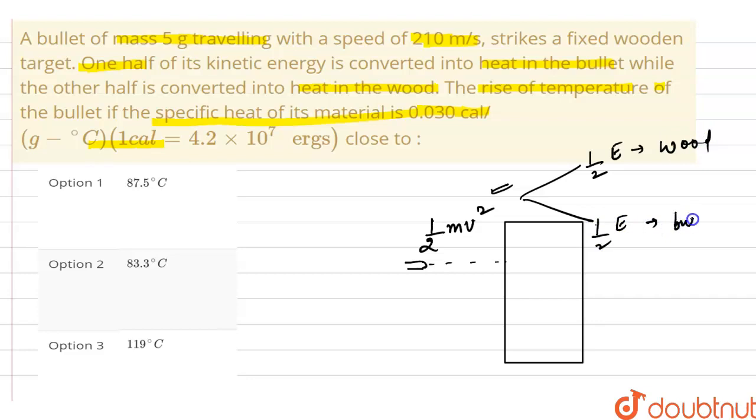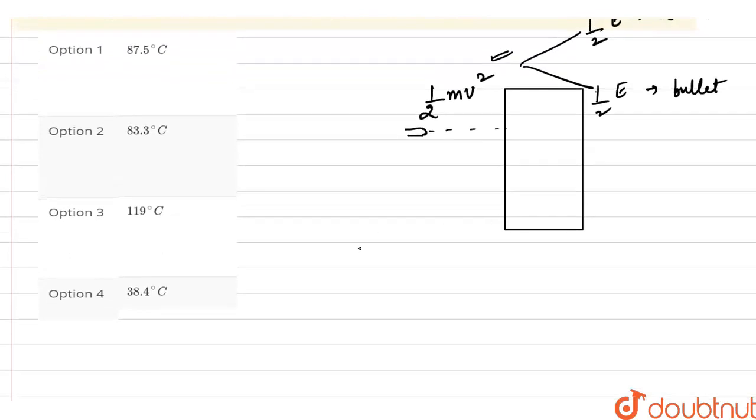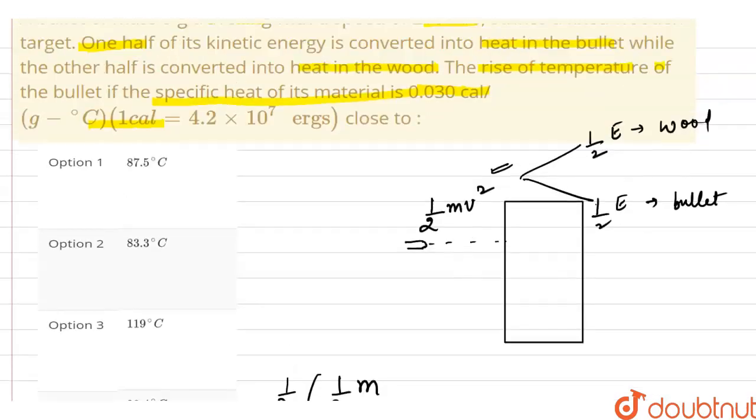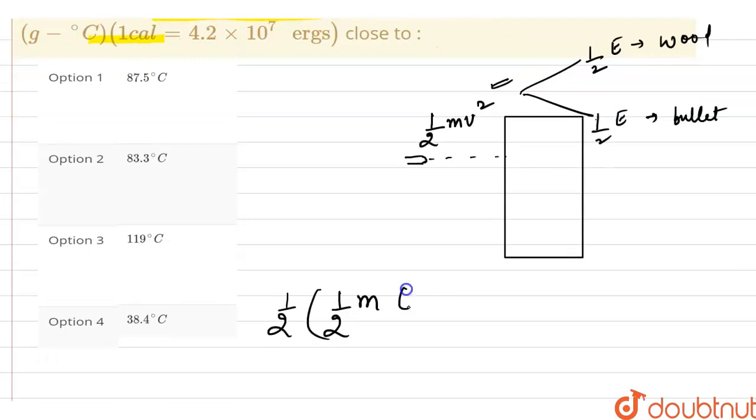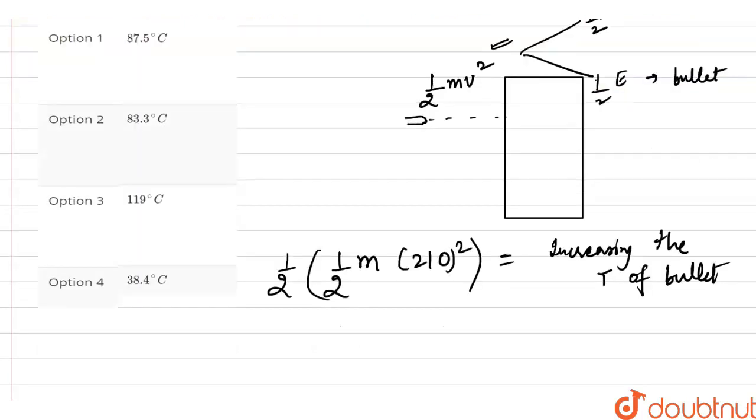All right, so let's calculate the half of this kinetic energy which is 1/2 m, velocity is 210 meter per second, 210 square. Now this energy is consumed in increasing the temperature of bullet.